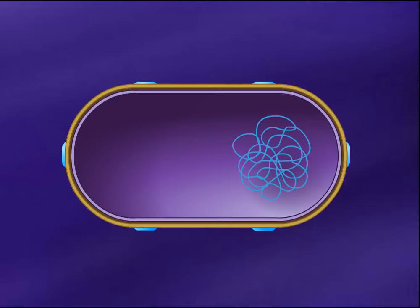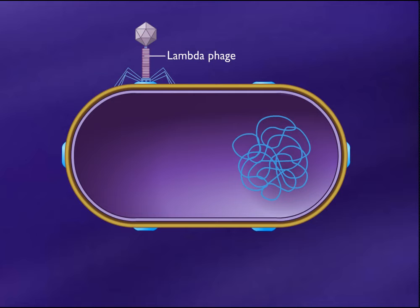Specialized transduction involves the transfer of only a few specific genes from one bacterial cell to another by means of a phage. The lambda phage, which infects E. coli, is a well-studied example of a specialized transducing phage.